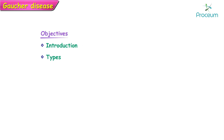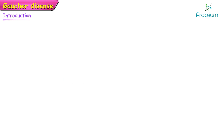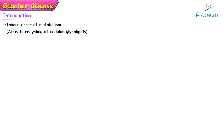Welcome to another video. In this video we're going to be discussing an important lysosomal storage disorder: Gaucher's disease. Gaucher's disease is an inborn error of metabolism that affects the recycling of cellular glycolipids. It is an autosomal recessive disorder that results from